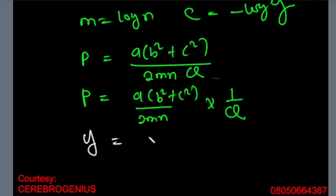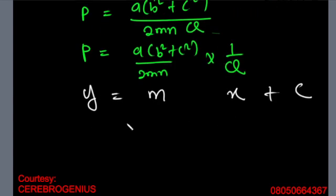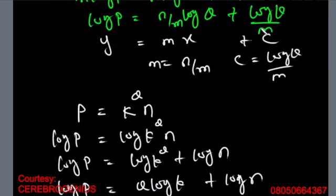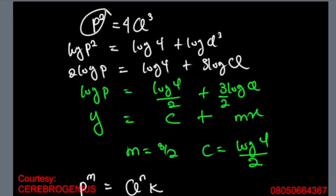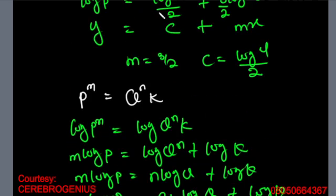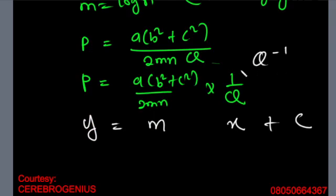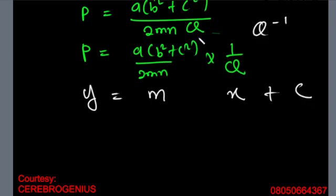So you write it as y = mx + c, where (b² + c²)/(2mn) is your m and 1/q is your x, plus c. That means you are plotting graph of p against 1/q — not p against q. Plot p against 1/q together with its power. When powers are positive, use logarithm; when the power is negative, don't use logarithm — just do it directly. So you plot graph of p against q inverse, your slope is all of that expression, and your intercept is zero.